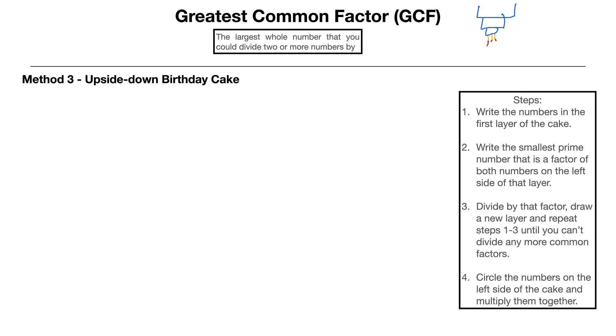We've got our steps right here on the right-hand side. So let's say we had the numbers 18 and 24 and we had to find what is the greatest common factor those two numbers have. Step 1: Write the numbers in the first layer of the cake. I'm going to draw a line like that—that's our first layer of the cake with the numbers in there.